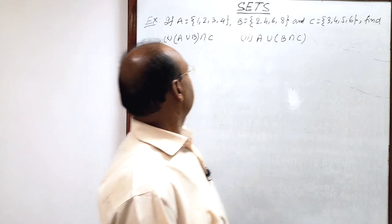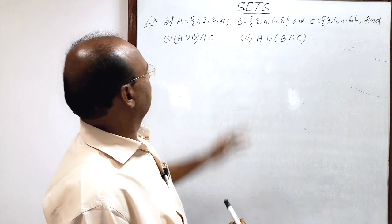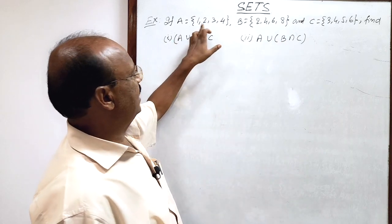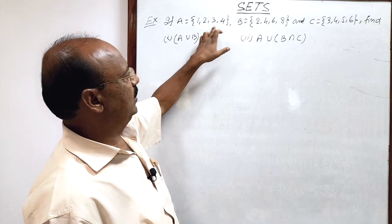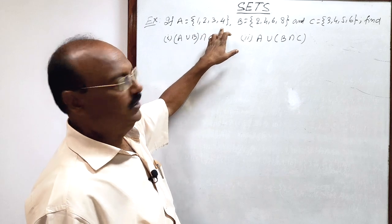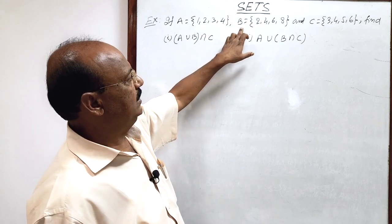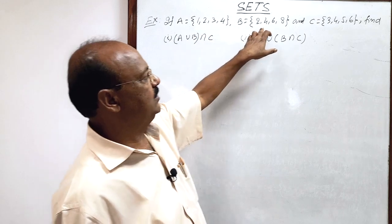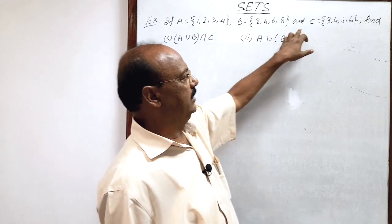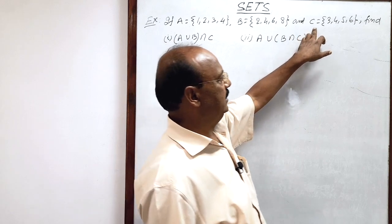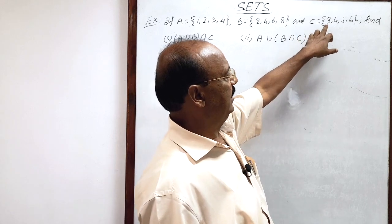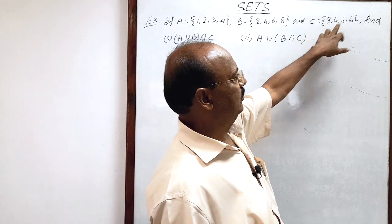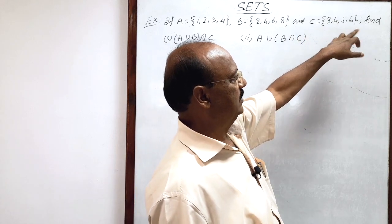Set A has elements {1, 2, 3, 4}. Set B has elements {2, 4, 6, 8} and set C has elements {3, 4, 5, 6}.